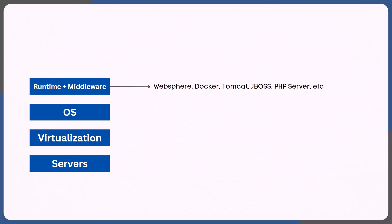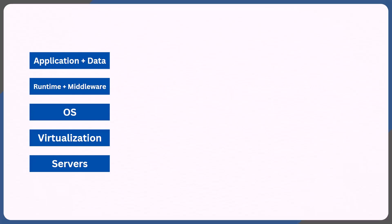Once I have the runtime and middleware, I can then host or deploy my application along with its data. This is where I'm going to copy or deploy the artifacts, dependencies, packed files, data, etc. For example, if you're hosting a WordPress website, then in addition to copying all the packages and themes, you also need to copy the data that your application uses.